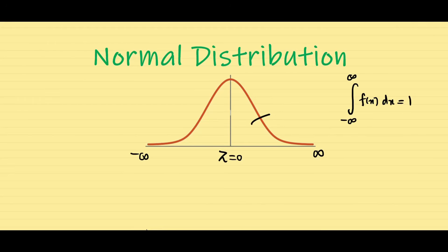From the symmetry property about the line z equal to 0, the right-hand side area is 0.5 and the left-hand side area is also 0.5. Now, to solve the problems it is very tough to do the integration for normal distribution, so Gauss found a table which gives the solution without doing any integration. I will show the table here.